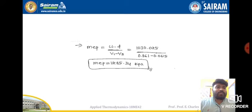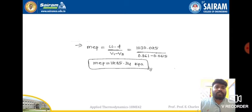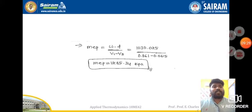Next we find the mean effective pressure. The formula is: mean effective pressure = work done / (v1 − v2). Here v1 − v2 is nothing but the stroke volume Vs. Since we know both the work done and the volumes v1 and v2, we can find the mean effective pressure for this diesel cycle.